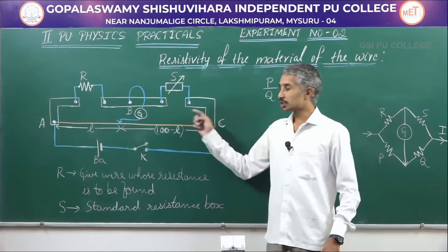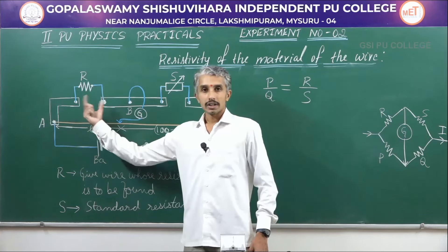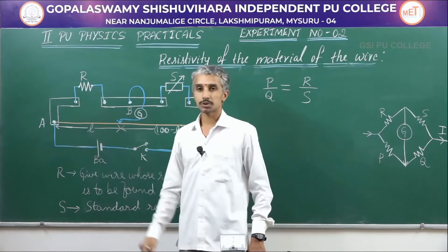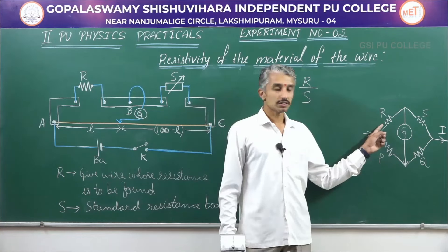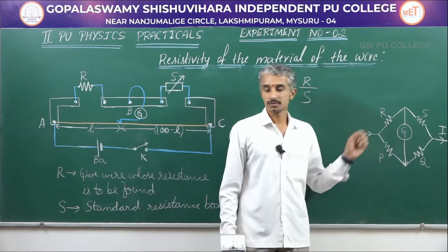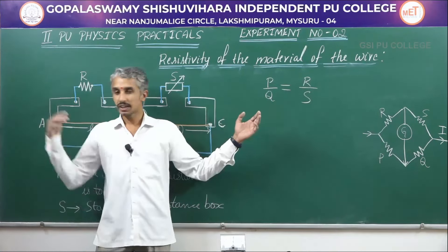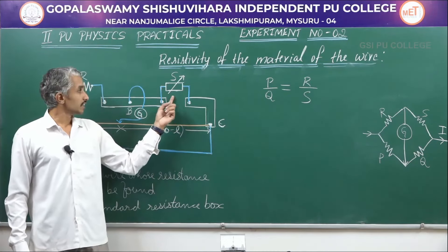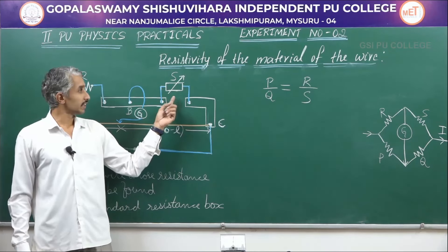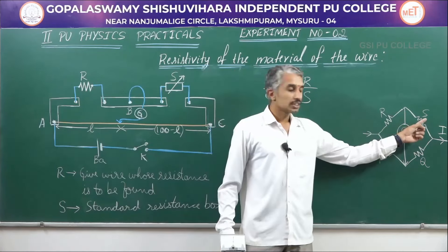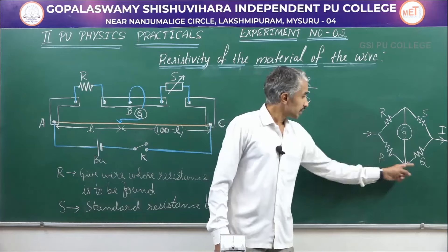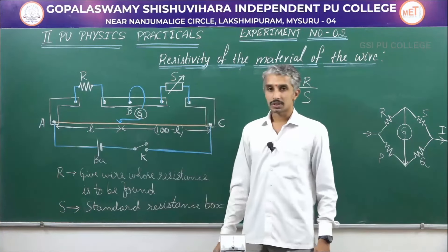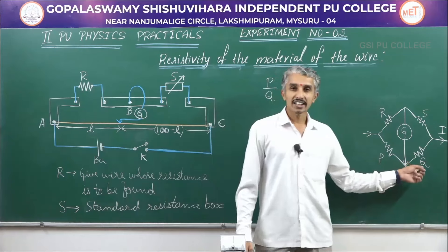In the meter bridge we have a right gap, where we connect the resistance wire for which we want to find the resistance — represented as R in the Wheatstone network. In the left gap, a standard resistance box is connected, represented as S. For P and Q, the meter bridge wire runs from A to C, and this wire acts as both P and Q.